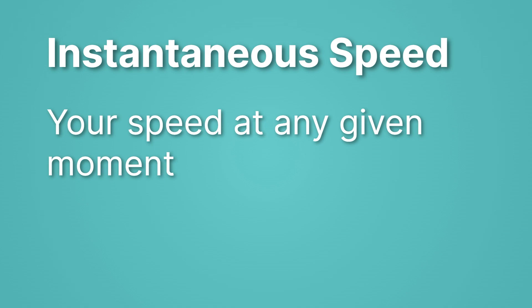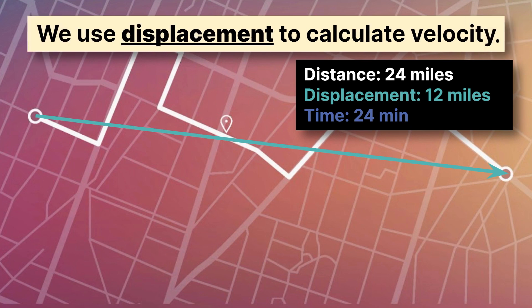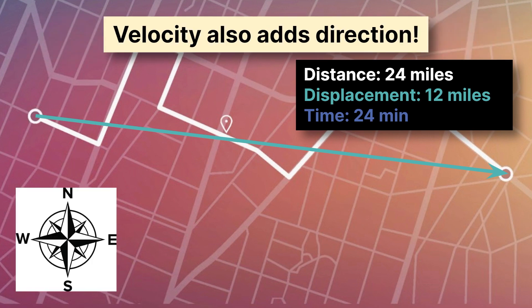Now, when we're calculating speed, we always use distance, like we just saw. However, if we want to calculate what we call velocity, we're going to use displacement. Velocity is a vector, which means it has a direction. If we consider the white path, it has no one clear direction — first it's going south, then a little north, then a little east, then a little south. But if we just draw a line from the start to the finish — that teal arrow — now it has a pretty clear direction: we're going towards the east. So our velocity uses displacement, which has a clear direction, even if our trip is meandering.